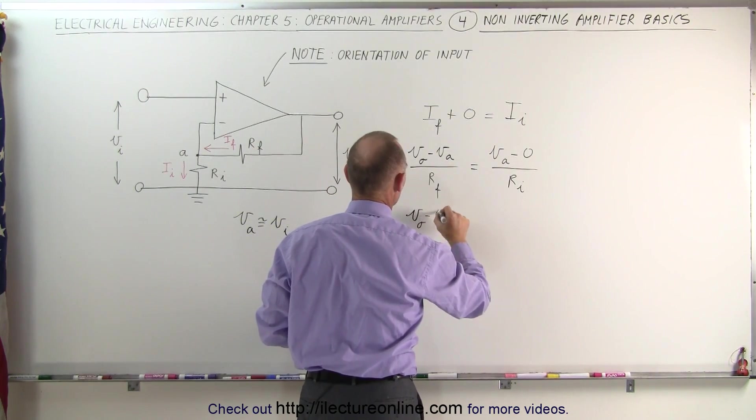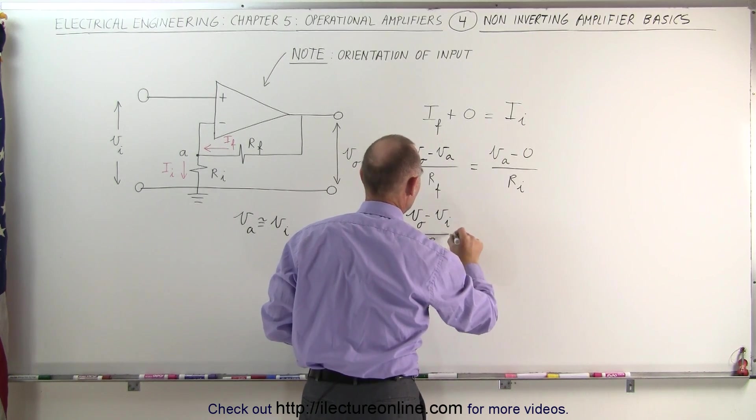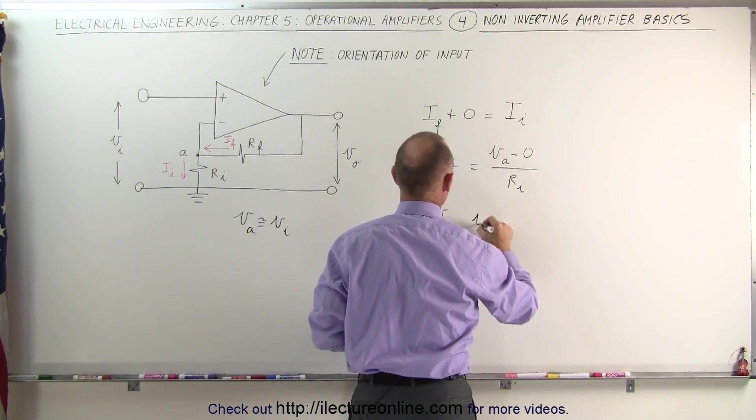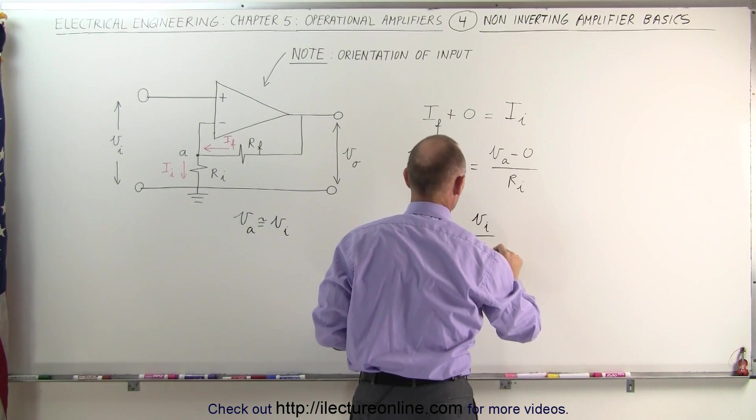V sub O minus V sub I divided by R sub F is equal to V sub I minus zero divided by R sub I.